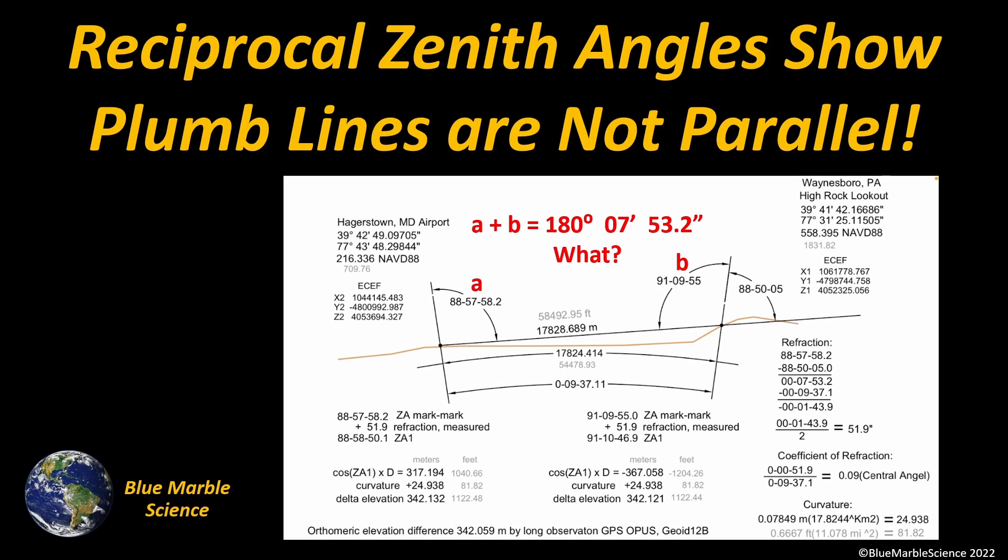Well hello everybody, welcome to Blue Marble Science. Reciprocal zenith angles show us that plumb lines are not parallel. I think this is one of the better ways that we can demonstrate that the earth cannot be flat, and I'm going to show you how that works in this video.